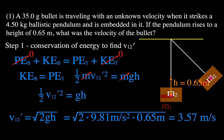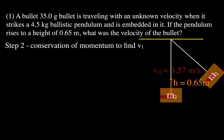This 3.57 m/s is not the velocity of the bullet — it is the velocity of the combined bullet-pendulum system right after the bullet embeds itself, just before the pendulum starts to swing up. Now we use that value in Step 2. We use conservation of momentum to find V1, the velocity of the bullet. M1 is the bullet, so V1 is the velocity of the bullet before the collision.